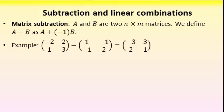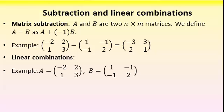We can also define what we mean by linear combinations of matrices. So for example, if I have two matrices like this, I can define a linear combination of these two matrices. And a linear combination simply means that I take one scalar multiplied by the first, then I add another scalar multiplied by the second.